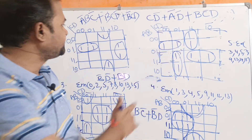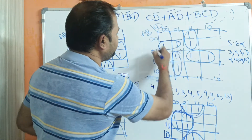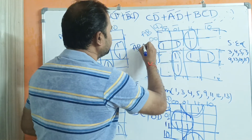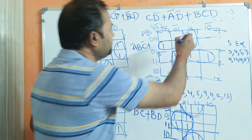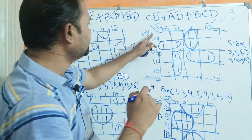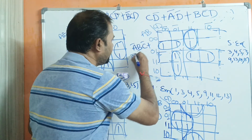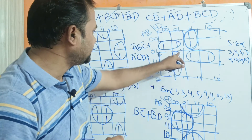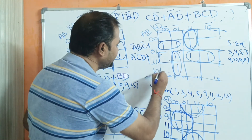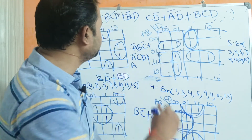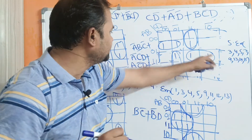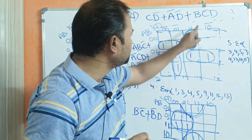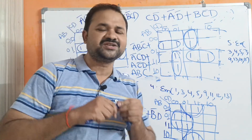Now let us write the expression. For the first group: first 0 is common, so Ā; and 1,1 means C̅ — giving ĀC̅. For the next pair: 1,1,1,0 — A=1 is common — and 0,1 means C̅D — giving AC̅D. For another pair: A=1, B=1, giving AB. And 1,1,1,0 — C=1 is common — giving ABC. Likewise we can solve any problem very, very easily. In the next video we will solve some more examples on the four-variable Karnaugh map.